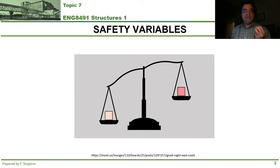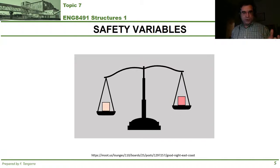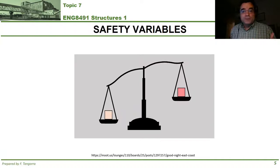Now let's take a moment to discuss the variables that come into play in the safety of structures. As previously shown, safety in a structure is a balance between the properties of the construction materials used to build a structure and the loads applied to that structure.